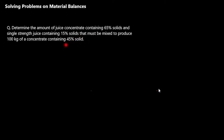Let's read the question: determine the amount of juice concentrate containing 65% solids and single strength juice containing 15% solids that must be mixed — so there are two components to be mixed — to finally produce 100 kg of a concentrate containing 45% solids.